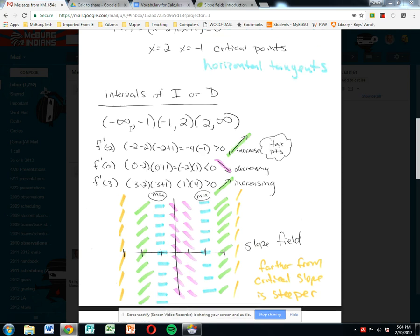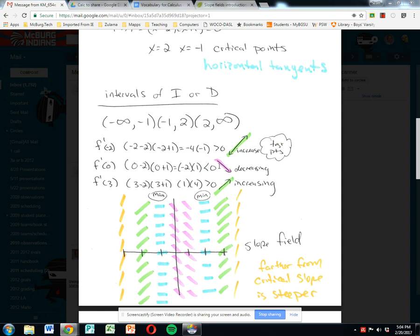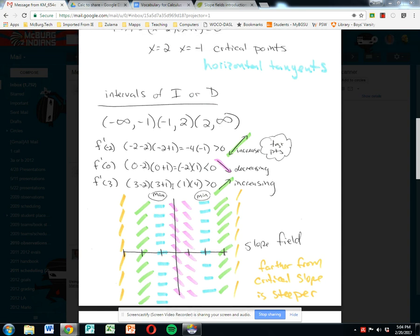What's happening on the intervals? I set up the intervals: negative infinity to -1, -1 to 2, and 2 to infinity. I plugged in test points and found that f'(-2) > 0, so that's increasing. f'(0), the middle interval, is decreasing. And f'(3), from the far right interval, is positive, so it increases again.